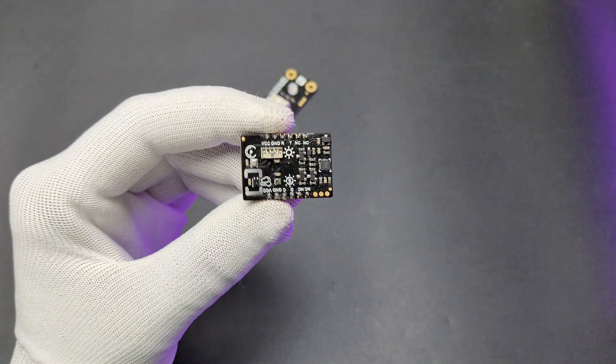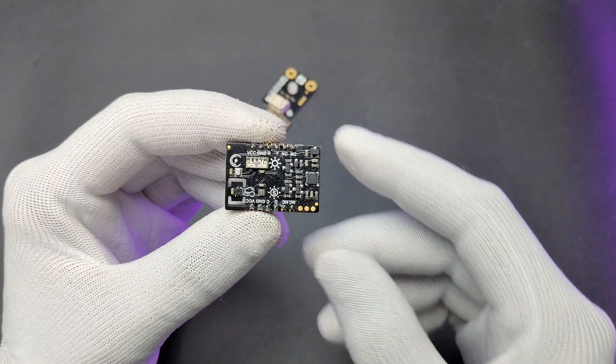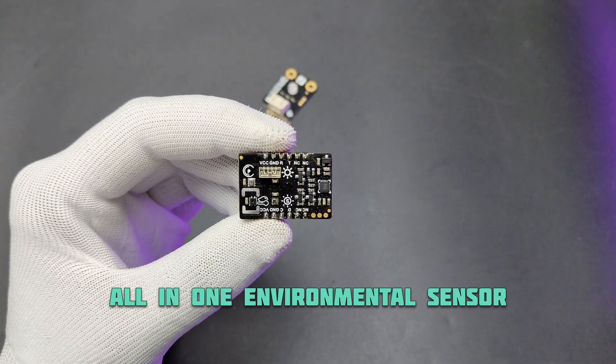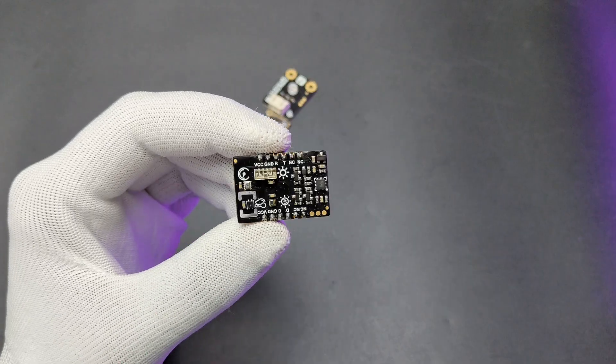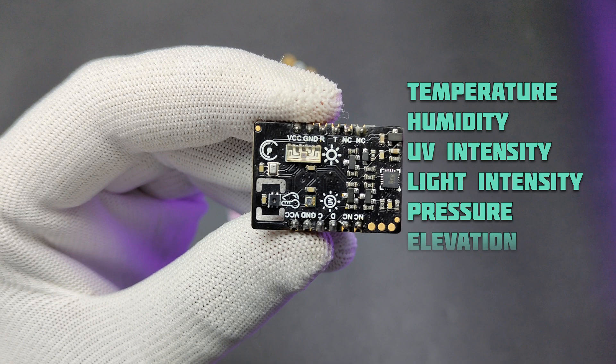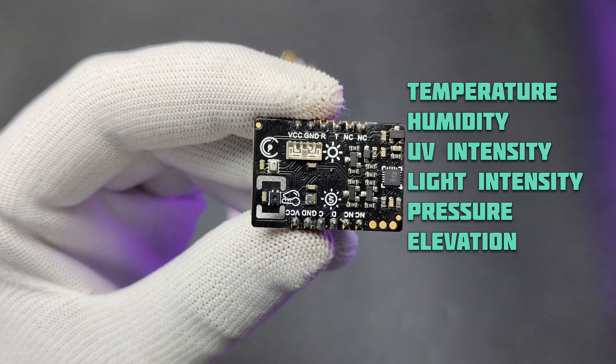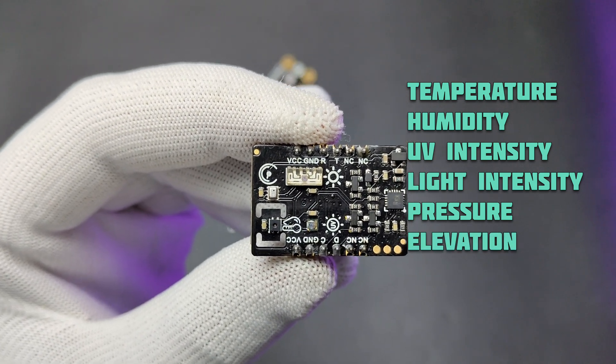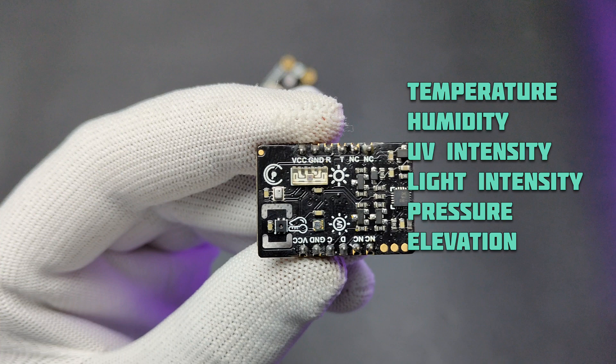Here is the solution for all these problems, an all-in-one environmental sensor module from DFROBOT. This tiny module can measure temperature, humidity, ultraviolet intensity, light intensity, atmospheric pressure and elevation. This can be integrated with both I2C and UART modes.